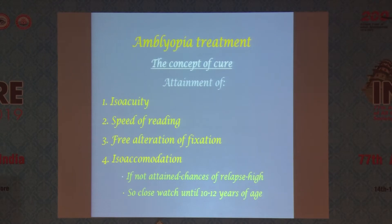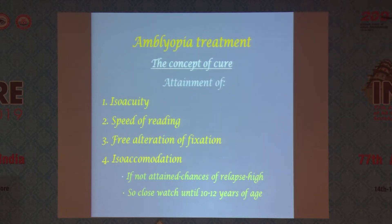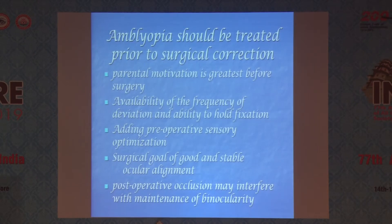What is the concept of cure? You have to achieve equal visual acuity — one-to-one — equal speed of reading, free alternation of fixation, and equal accommodation. If any one of these is not acquired, relapse is very common and can occur at any time.